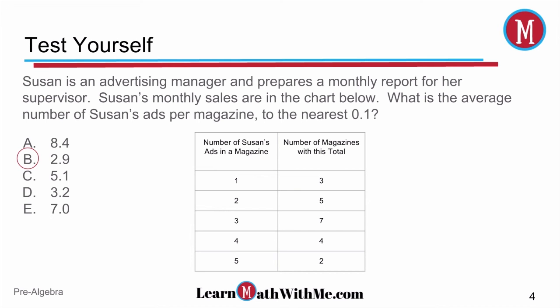So when we take a look at the chart, we have the number of Susan's ads in a magazine. She ranges from having just one ad in a magazine up to five, and then the number of magazines with this total.